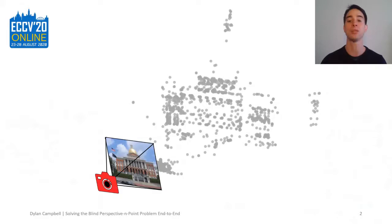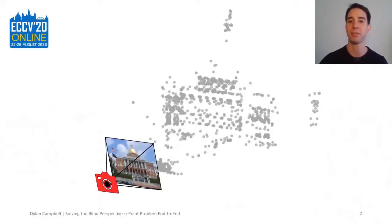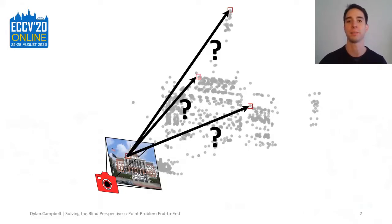Jointly solving for position, orientation, and correspondences is extremely challenging because the search space is very large. Fortunately it is a coupled problem — the pose can be found easily given the correspondences, and vice versa. But 2D-3D correspondences are difficult to obtain, particularly across modalities.